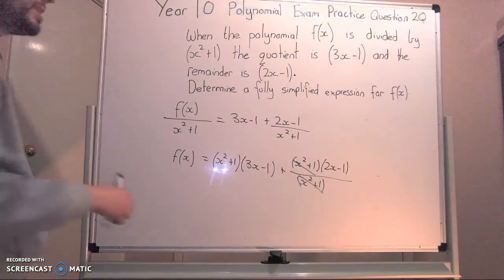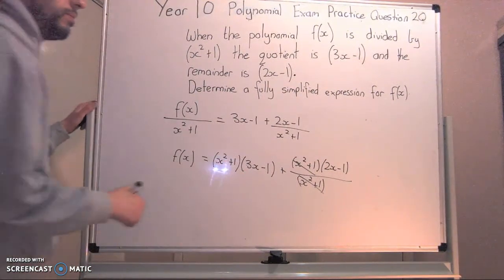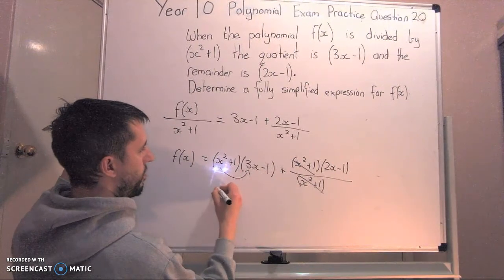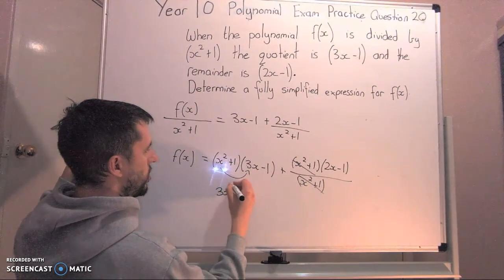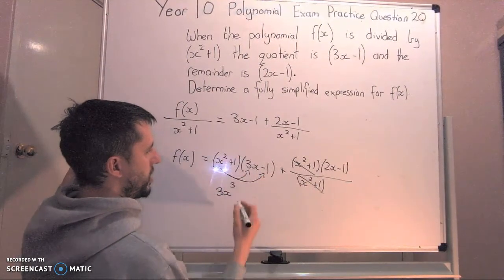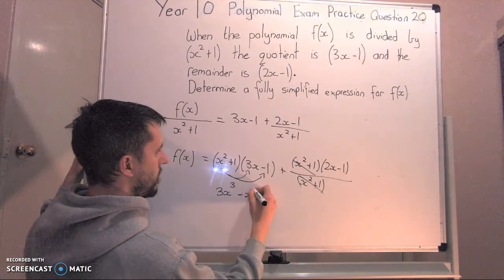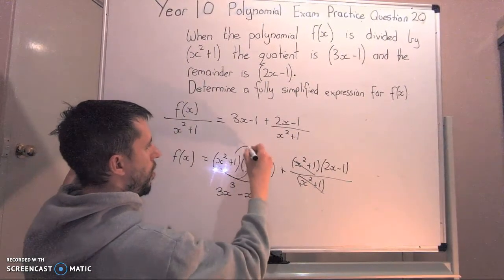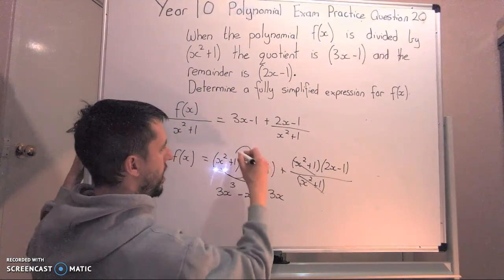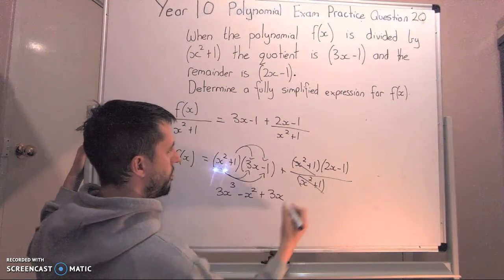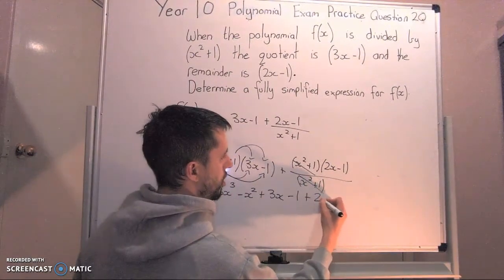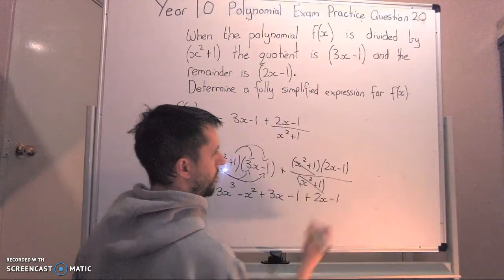Now the next thing I'm going to do is expand. That means x squared times 3x is 3x to the power of 3. x squared times negative 1 is negative x squared. 1 times 3x is 3x, and 1 times negative 1 is negative 1. That is added to the 2x minus 1.